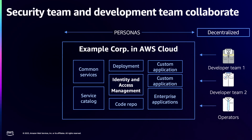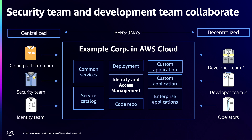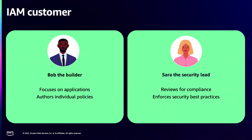In this model, we have the development team on one end who is working on the application and managing permissions for those applications. On the other end, you have the security team who is invested in the compliance for the whole organization and ensuring that teams follow security best practices. I'll be talking about two personas: Bob the Builder, who is focused on speed and wants the application to go to production fast, and Sarah the security lead, who works at scale across all accounts and is invested in security best practices and compliance.